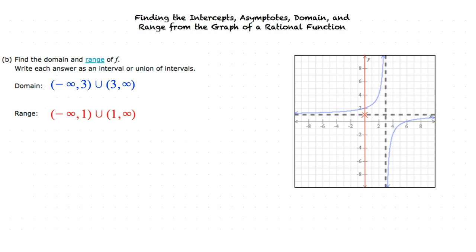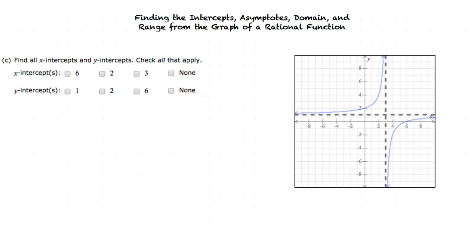Let's move on to part C, where we are asked to find the intercepts. The graph crosses the x-axis at x equals 6, so 6 is our x-intercept. The graph crosses the y-axis at y equals 2, as depicted here, so the y-intercept is y equals 2.